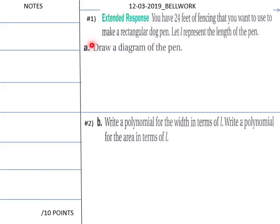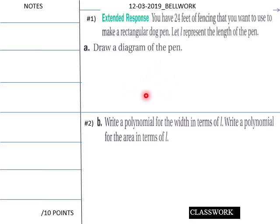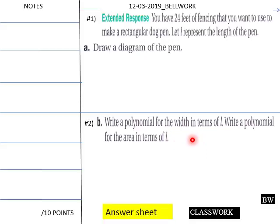Okay, today's bellwork. You have 24 feet of fencing you want to use to make a rectangular dog pen. Let L represent the length of the pin. Draw a diagram. Write a polynomial for the width in terms of L. Write a polynomial for the area in terms of L. So you've got 2 things here to do in terms of L. Teachers, give your students 5 minutes for your bellwork today.